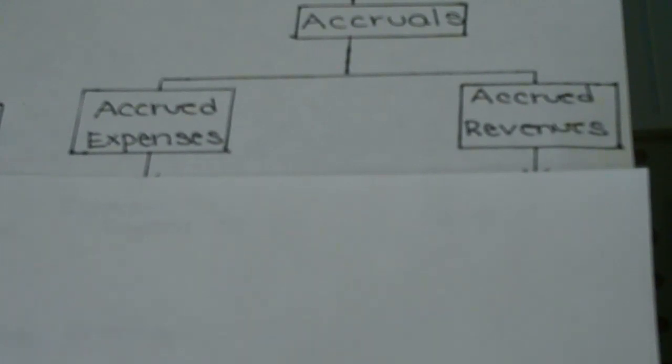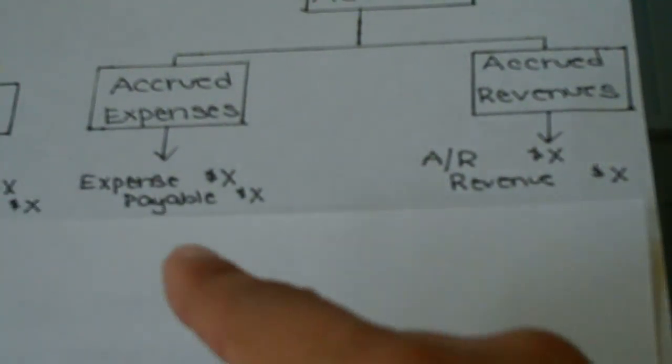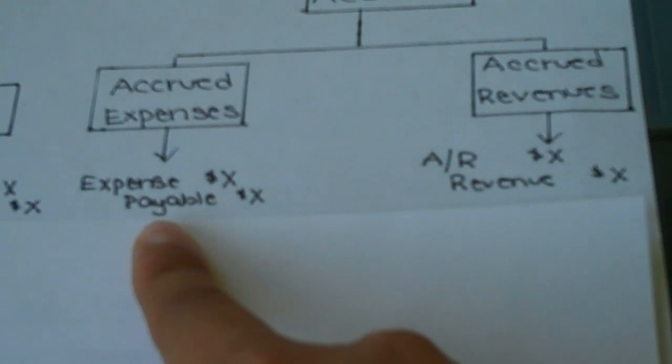If a company has either one of these items, we need to record it in the general journal. Here are examples of the journal entries. For accrued expense, you would increase the appropriate expense account and increase the appropriate payable account.